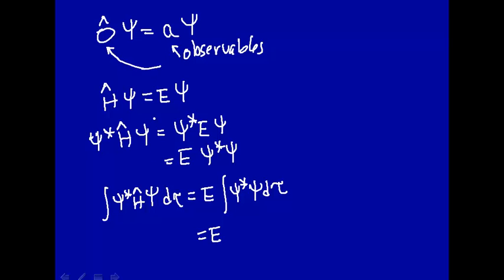Now let's remember that we're going to do this for a particular state, so let's denote these by n. So this will be the energy of the state. If we take the Hamiltonian operator and multiply on a particular wave function for state n, and then multiply that by the complex conjugate of the wave function of state n, and integrate over all space, this is equal to 1, we'll get the energy of that.